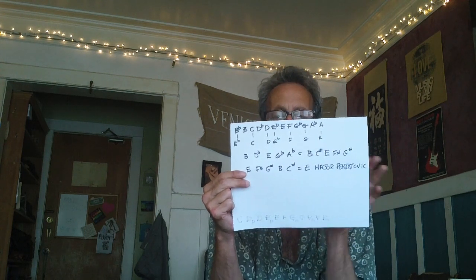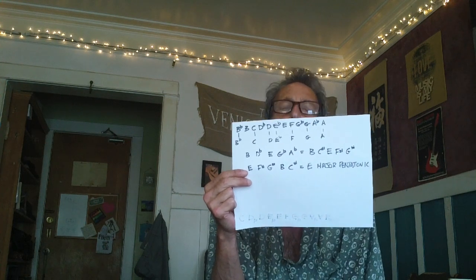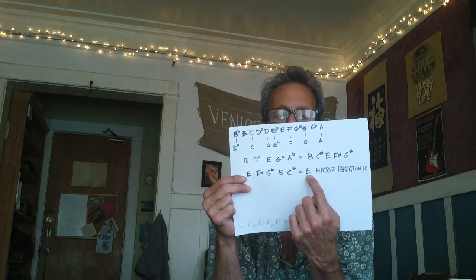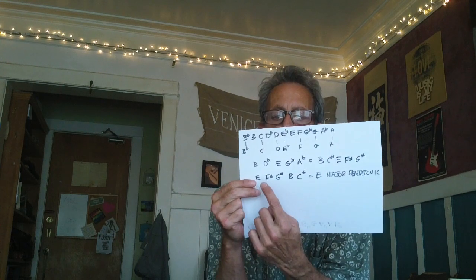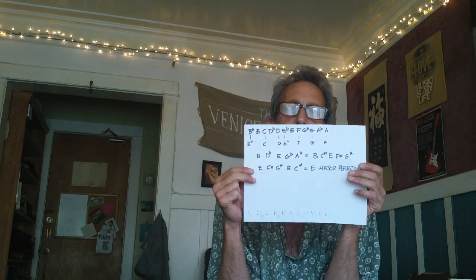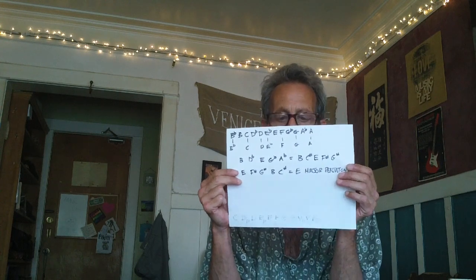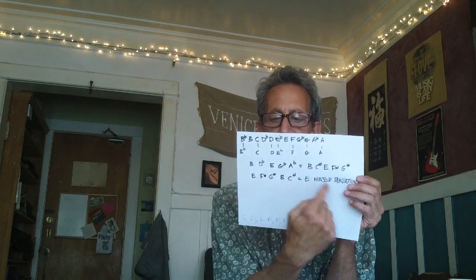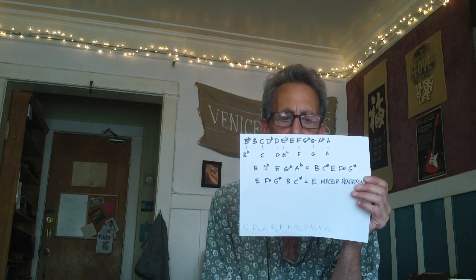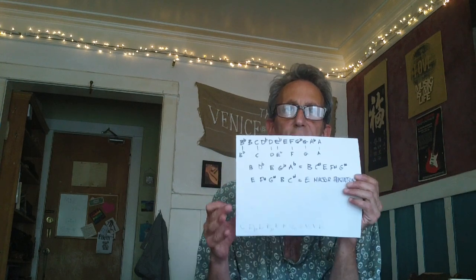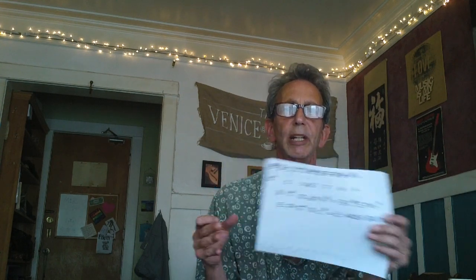Now if I put them in order of the Pentatonic formula — which is whole, whole, one and a half, whole, one and a half — I get E, F sharp, G sharp, B, C sharp, back to E. I'm sure you guitar players must know this particular Pentatonic scale since E major is such an important key for guitar. When I extracted the B flat major scale, I get the E major pentatonic as the leftover. You'll also note that the two different keys, B flat and E, are a tritone distance away — three whole steps — and there's some sort of mystery behind the tritone and how that all works.